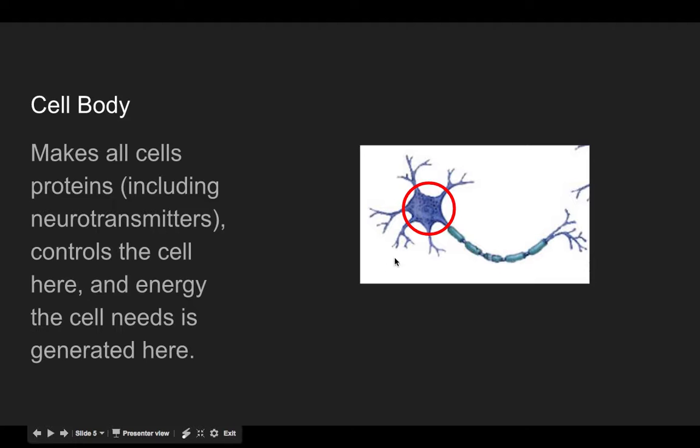Next, you've got the cell body. The cell body makes all your cells proteins, so that should give you a clue about what organelle is here. Some of these cell proteins do include neurotransmitters. We'll talk about what those are in a bit. This cell body controls all the cell functions and energy that the cell needs is generated here in that cell body. So there should be some hints in there about what organelles are there.